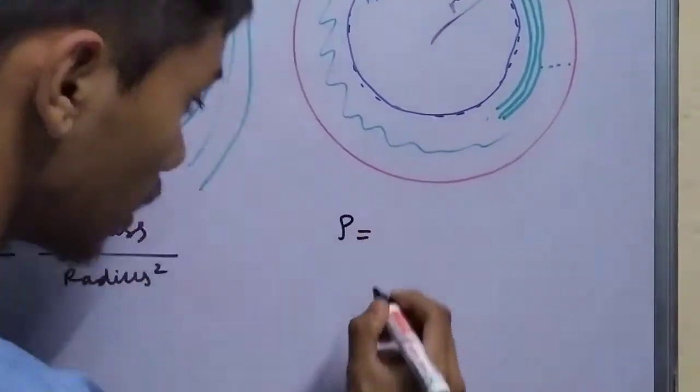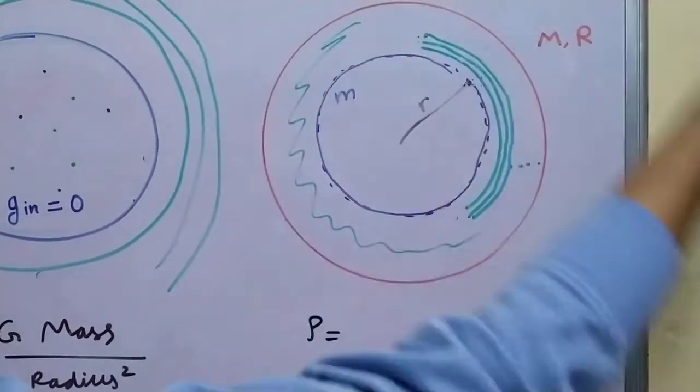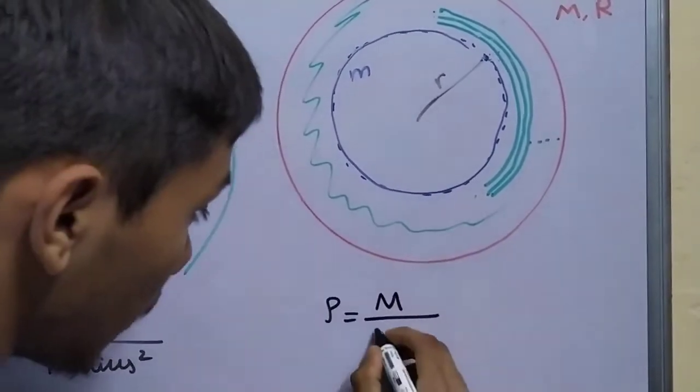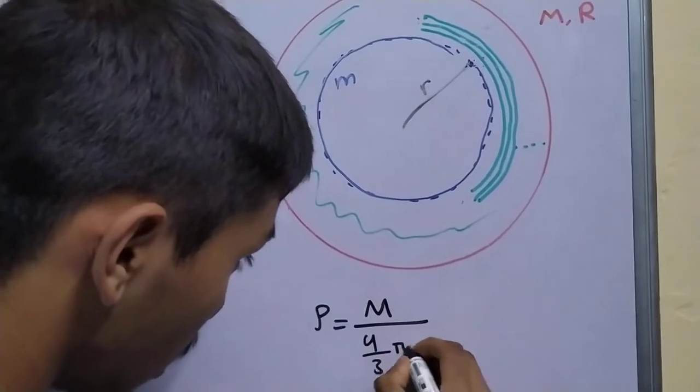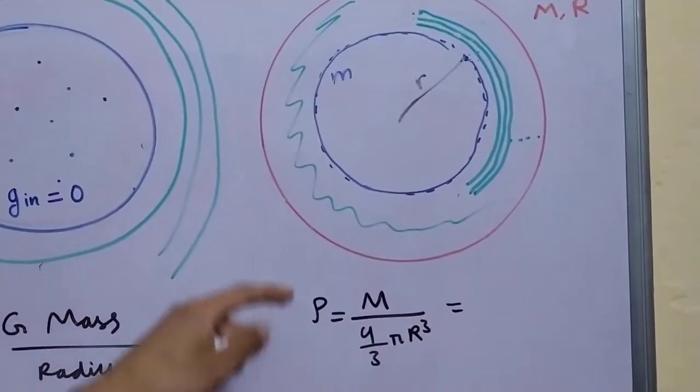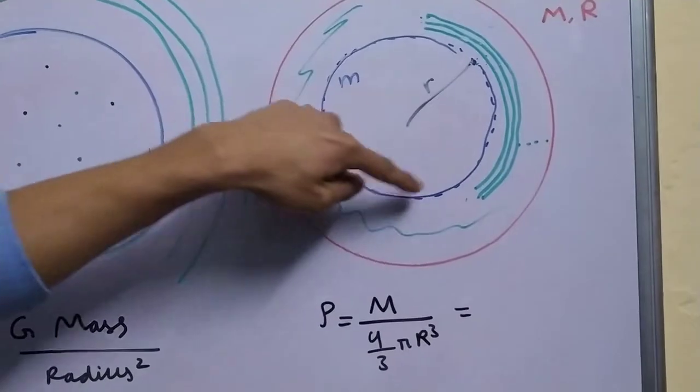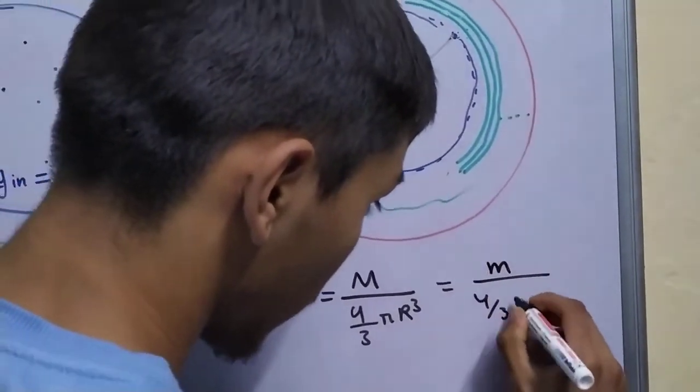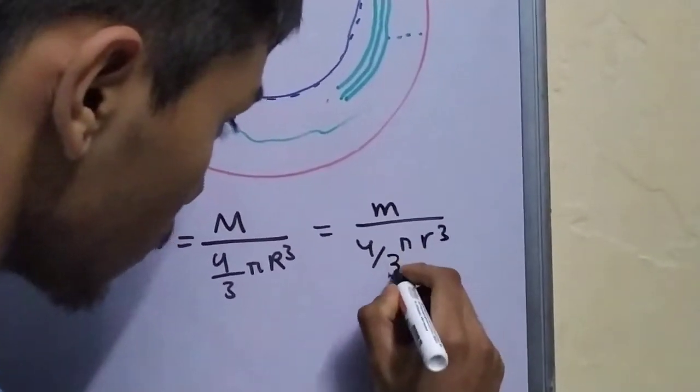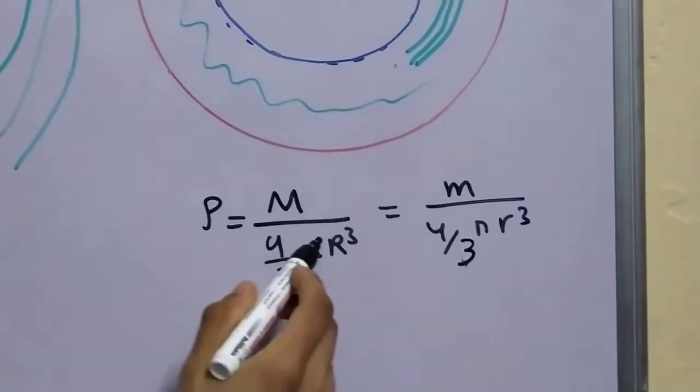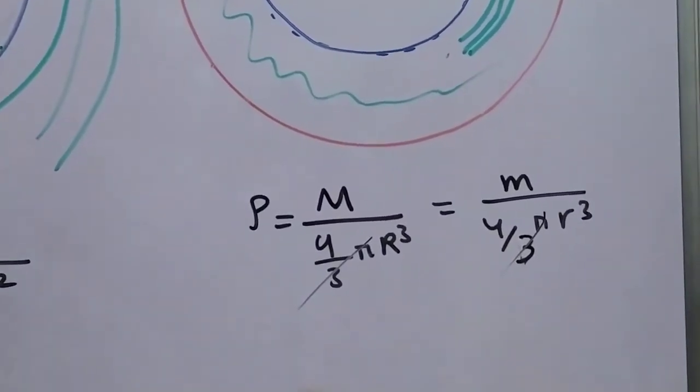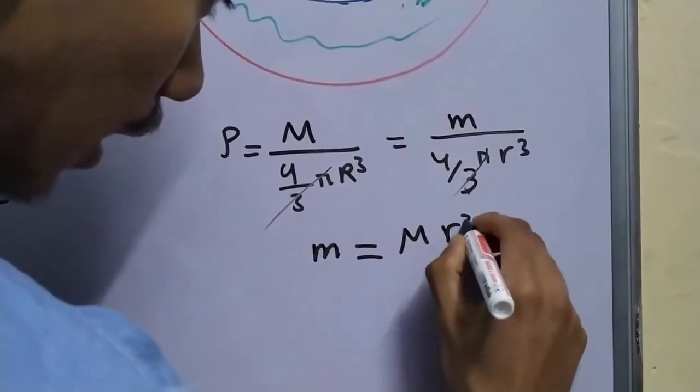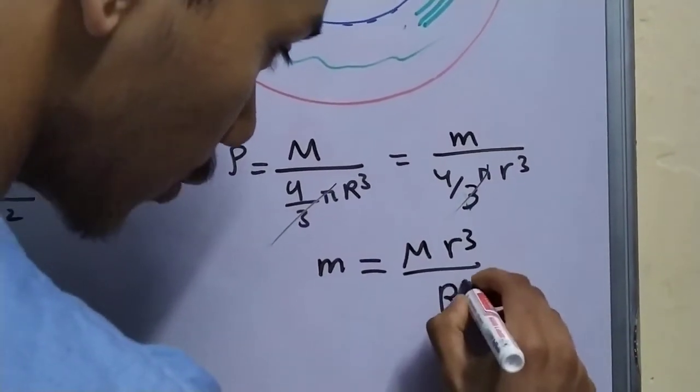The density rho is the same for any volume element. So it will be m by volume 4 by 3 pi r cube. And this has to be the same density of this blue region also. So we have m divided by 4 by 3 pi small r cube. So 4 by 3 and 4 by 3 pi can cancel each other out.